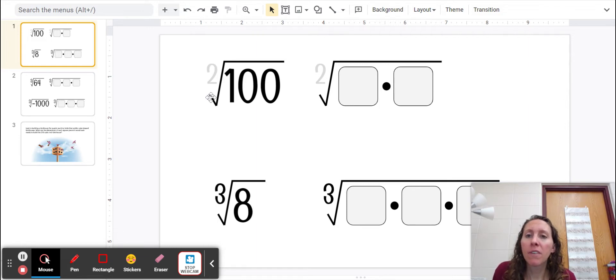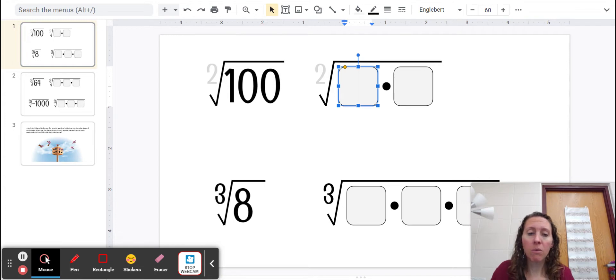If this symbol here is called a radical, and if there's no number before it floating up in the air, there is really an implied 2, and that's telling you to find the square root, which means what number times itself 2 times is equal to 100, or that number under the radical symbol. So that would be 10, because 10 times 10 is 100.